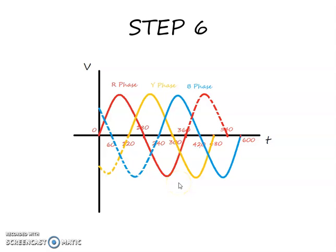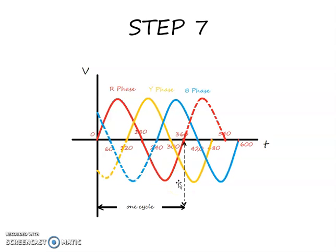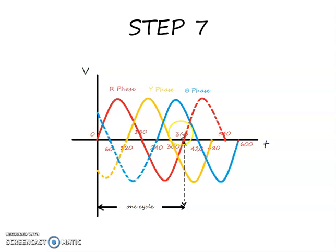So now we have a complete three-phase waveform. We normally know that one cycle means 360 degrees. You can see the one cycle marked for the R-phase waveform from 0 to 360 — it is marked as one cycle.